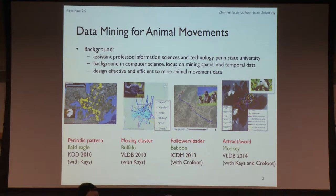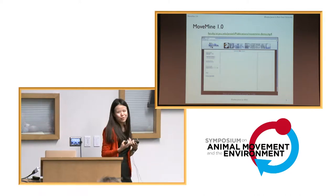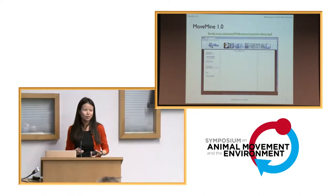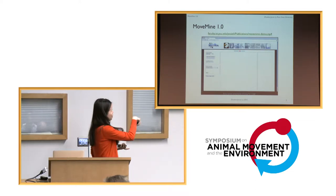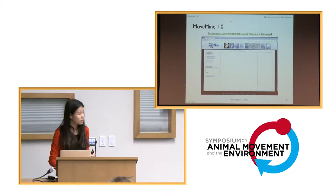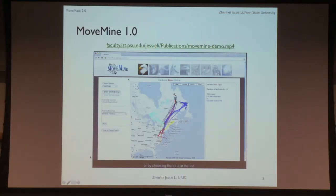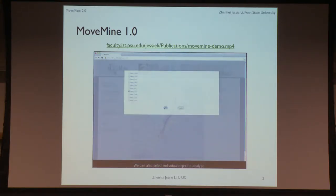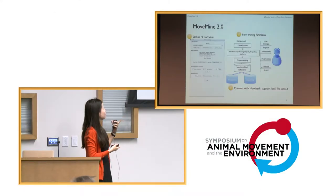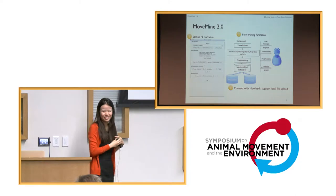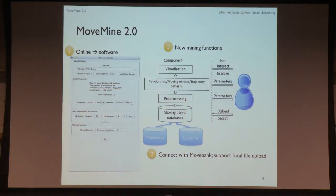We started in 2010 and have designed methods including periodic pattern mining, moving cluster mining, follow-leader pattern mining, and attraction-avoidance mining. Today I'm mainly going to show the follow-leader and attraction-avoidance patterns. I call this MoveMine 2.0 because we had a 1.0 before when I was a PhD student at University of Illinois. Now I'm the boss and I've pushed my students to do the work — that's a big leap, so that's why I call it 2.0.